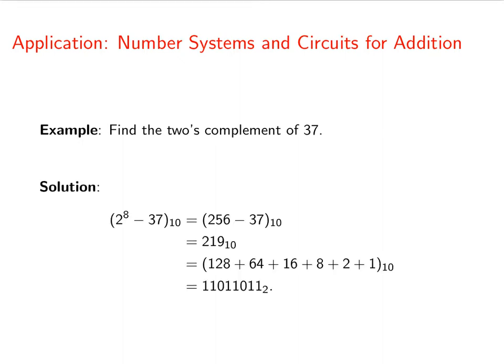So our solution is to subtract 37 from 2 to the 8th. 2 to the 8th is 256. That gives us 219. Then we express 219 in binary.